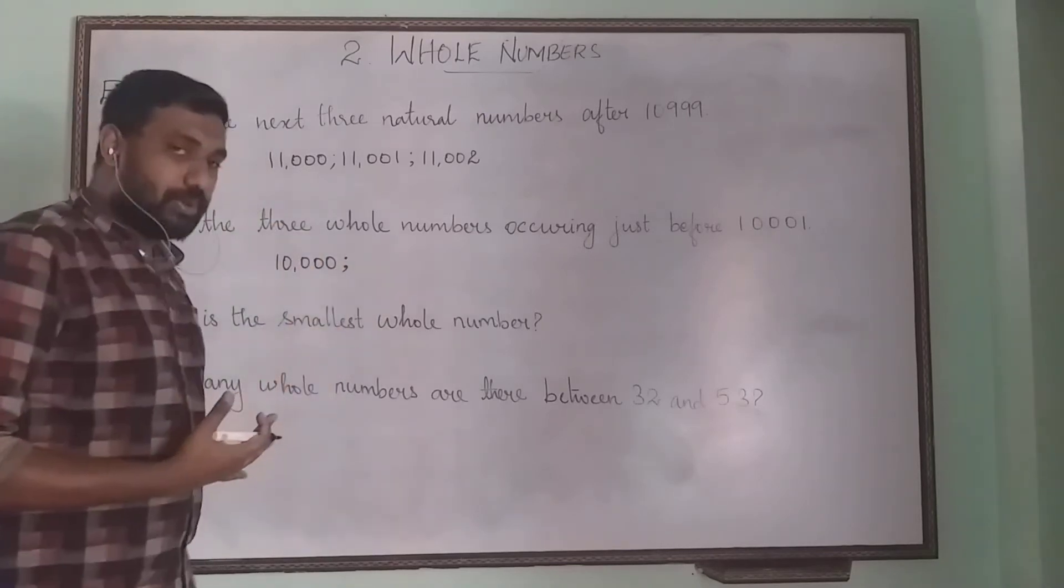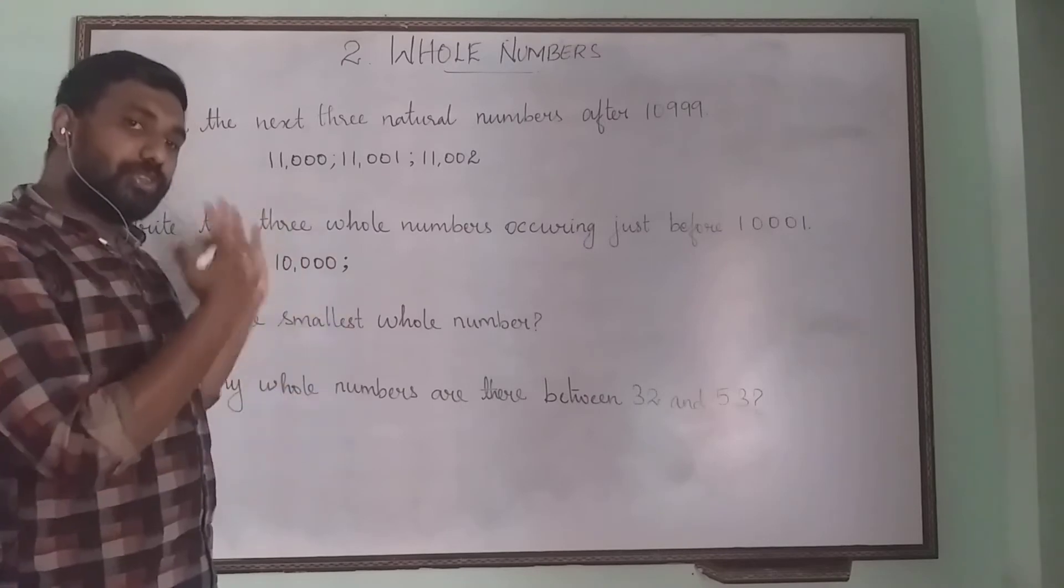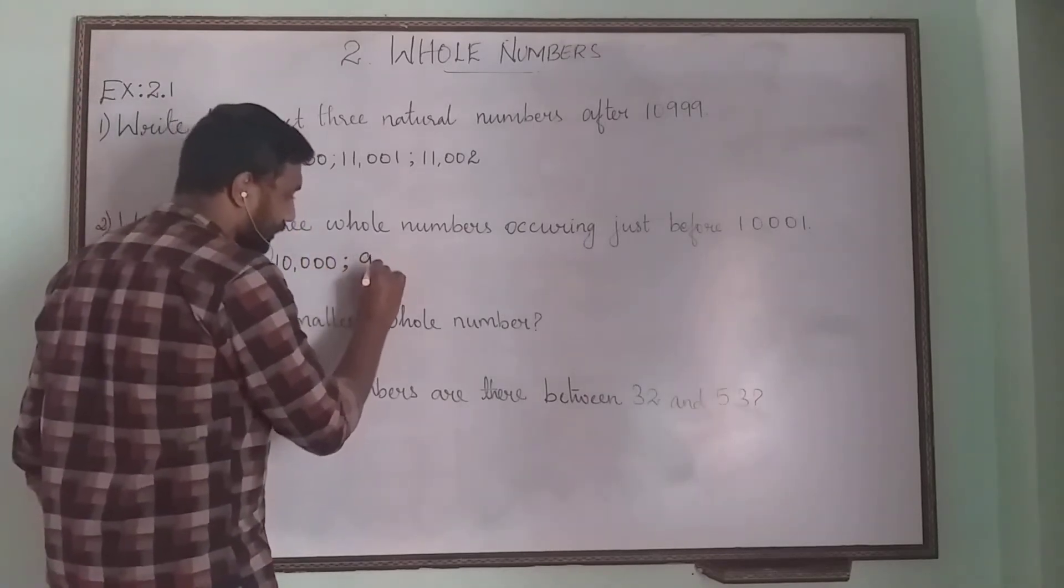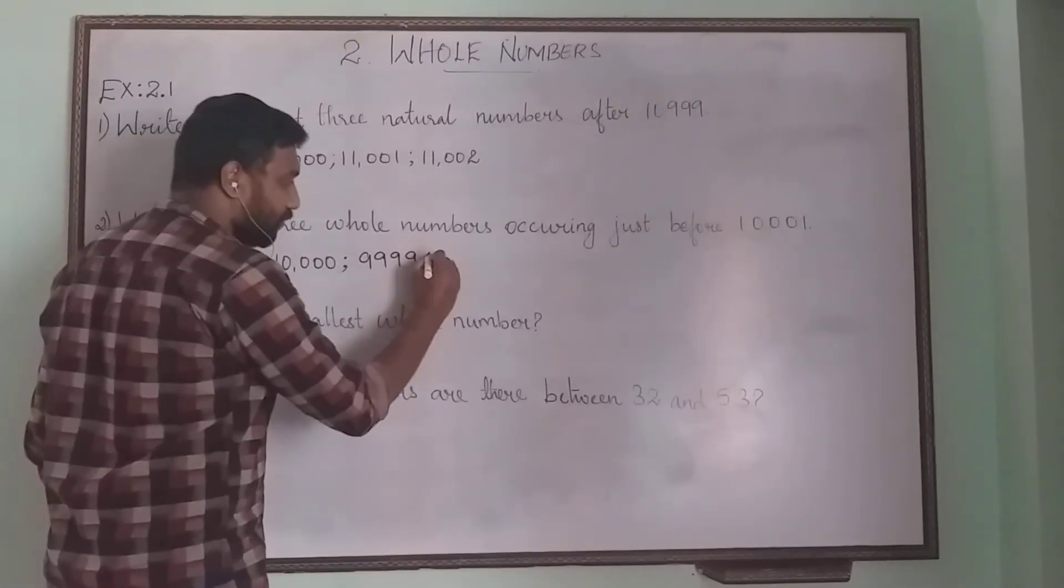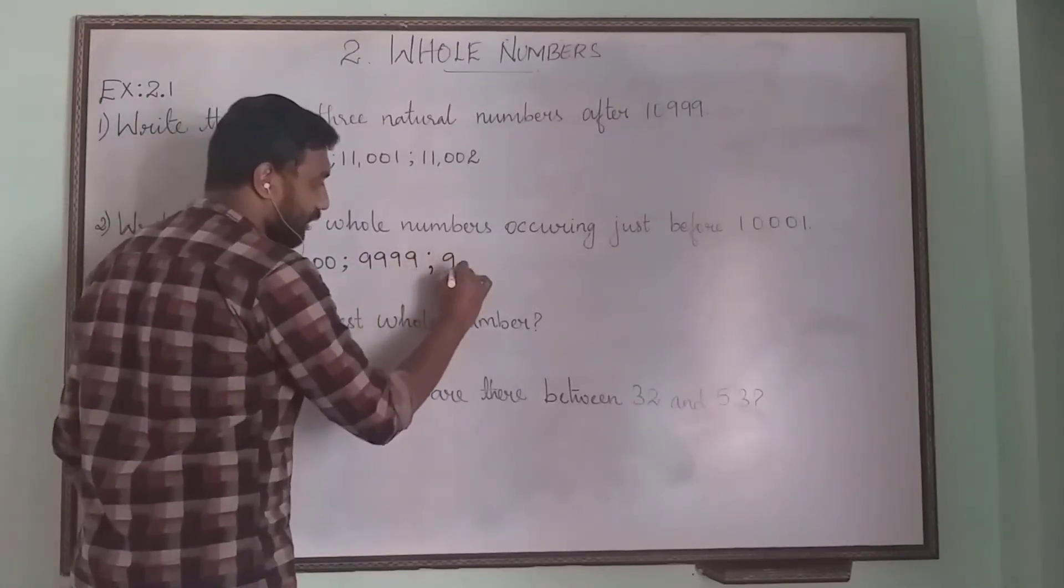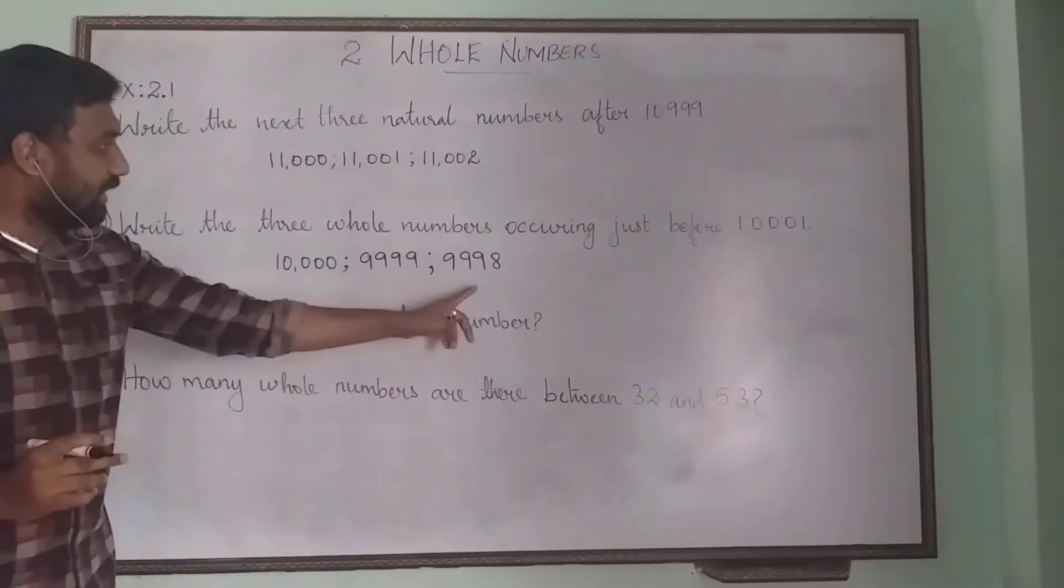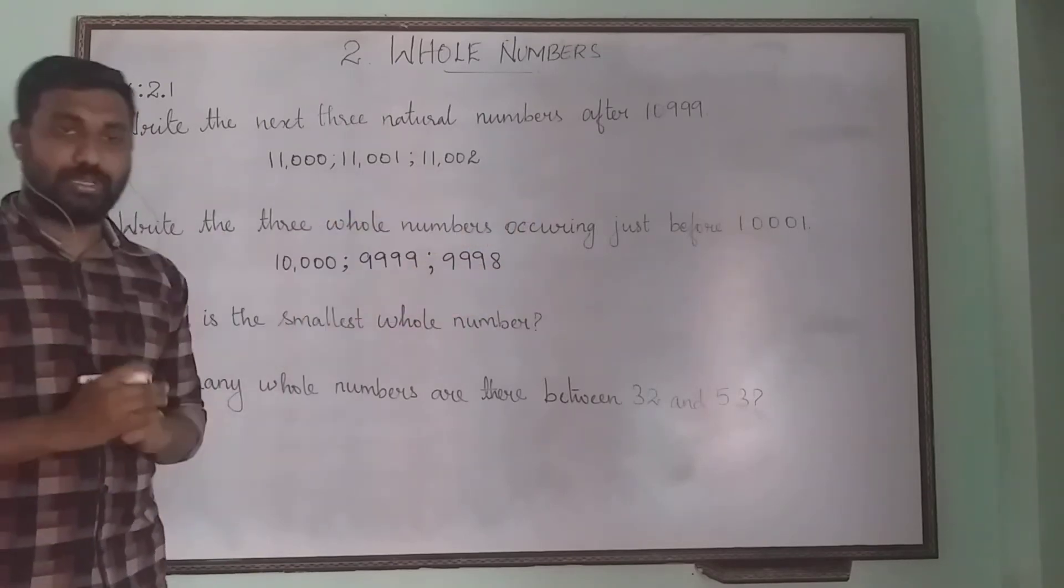Before 10,000, what will be the number? It is the five-digit smallest number. Before that will be the largest four-digit number, that is 9,999. Before that, it will be 9,998. So these are the three numbers occurring before 10,001.